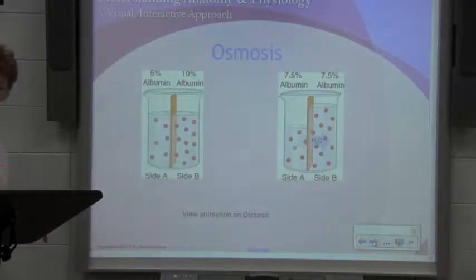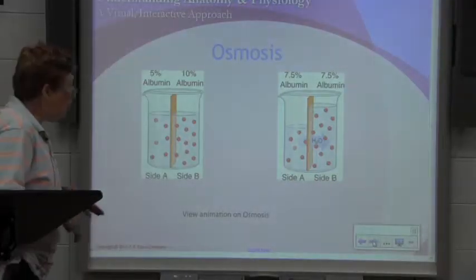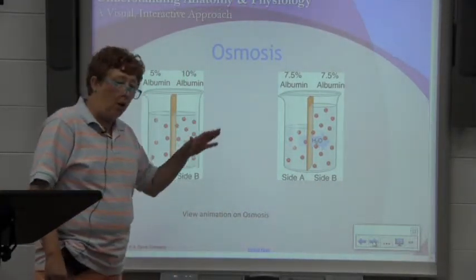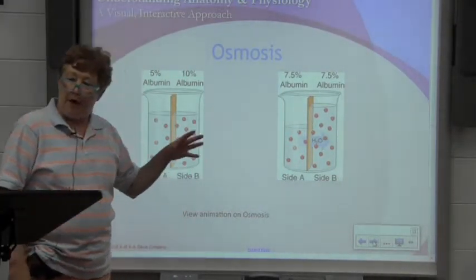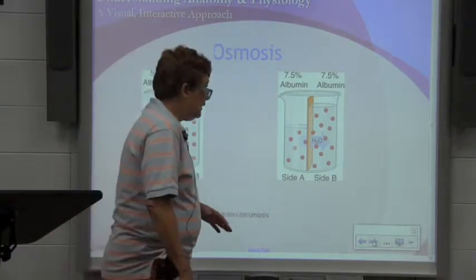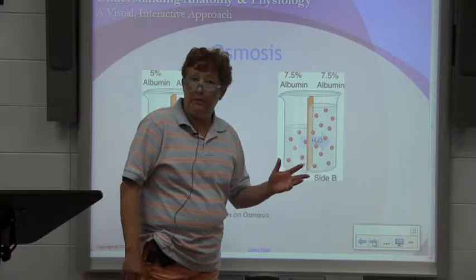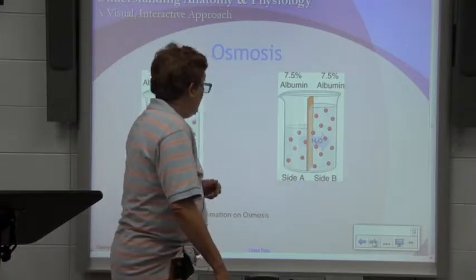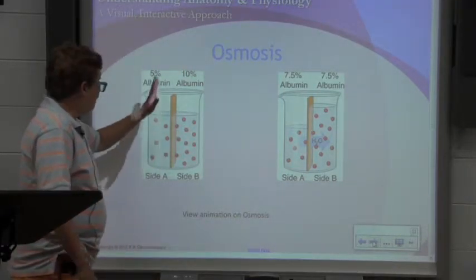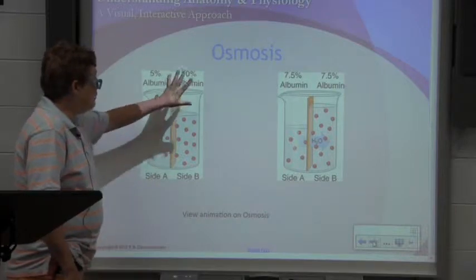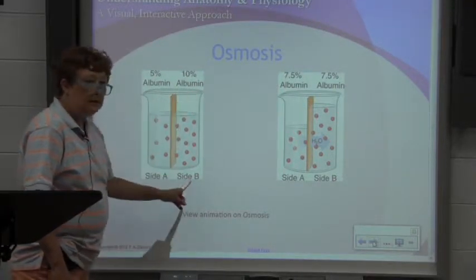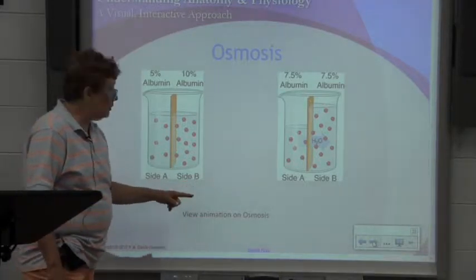Osmosis involves when water moves from an area of higher to lesser concentration — we call it osmosis — and that has to happen through a semi-permeable membrane. For example, on side A of the beaker you have a 5% albumin solution, and through a semi-permeable membrane in the middle, a 10% albumin solution.